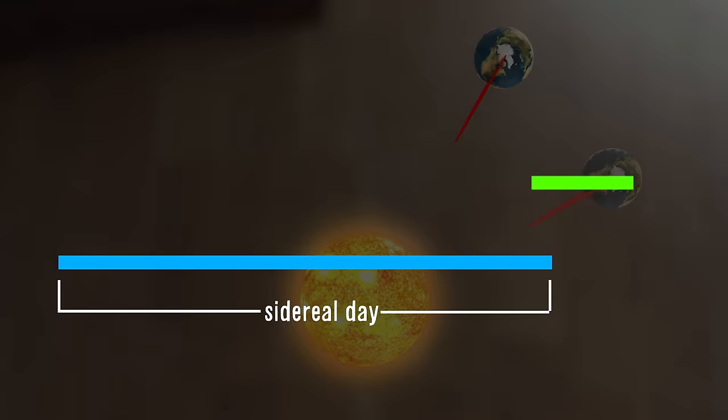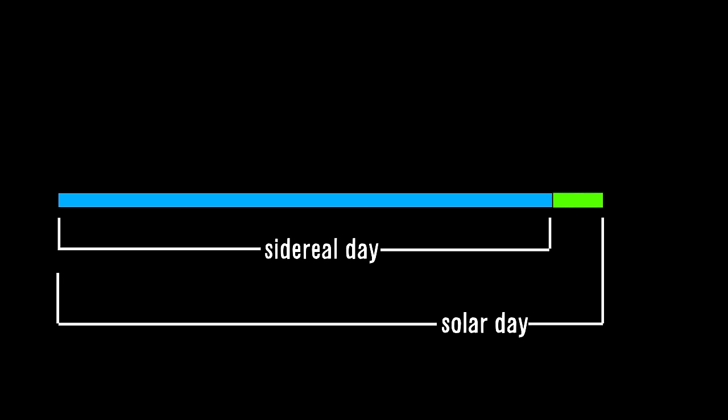But here's the thing. Exactly how long the Earth has to rotate to complete a Solar Day changes day to day. Our clocks are just based on the average amount of time this takes. So, throughout the year, they fall ahead and behind the Sun.